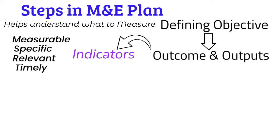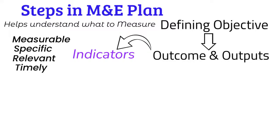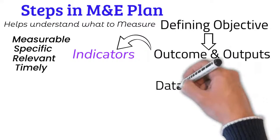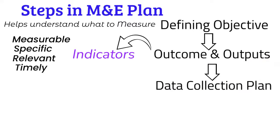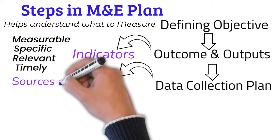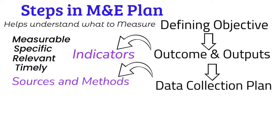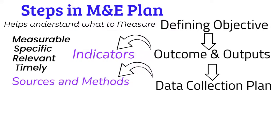Having identified and fixed the indicators at output and outcome level, we also need to develop a data collection plan. The data collection plan will determine the data sources and the collection method that will be used to collect the required data for the indicators. Data collection methods can include surveys, interviews, focus group discussions, or collecting data from secondary sources, such as reports and other administrative data.